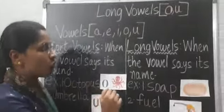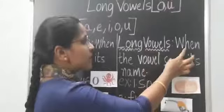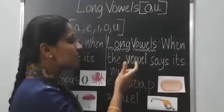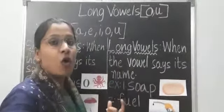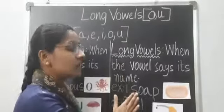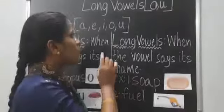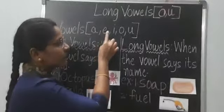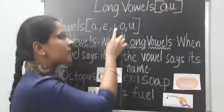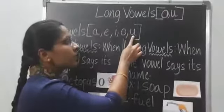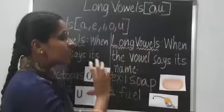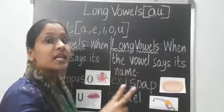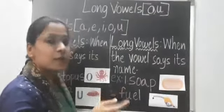So let's move on to long vowels. Long vowels — when the vowel says its name. When in a word, if a vowel is telling the name of a letter, then it is a long vowel. The name of a letter here is A, E, I, O, U. So in long vowels, in a word, we will have two vowels — one vowel will be speaking and another vowel will be silent.